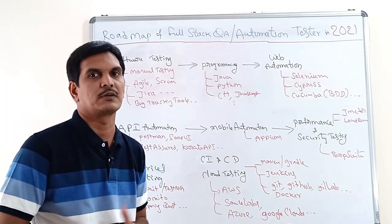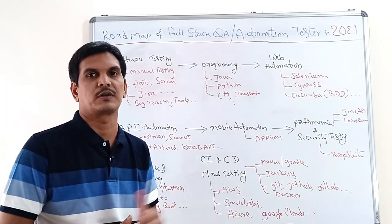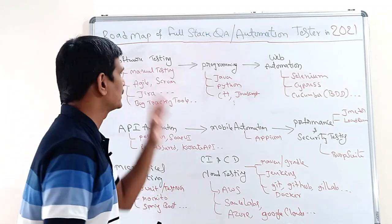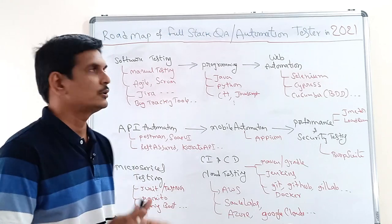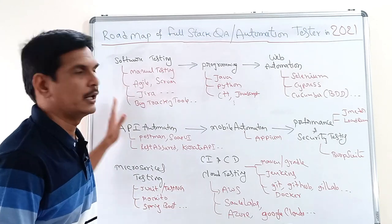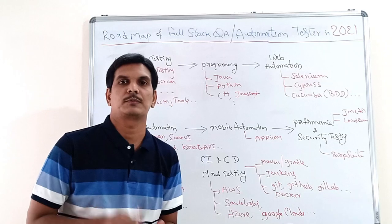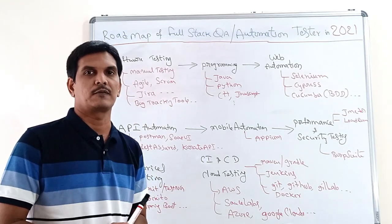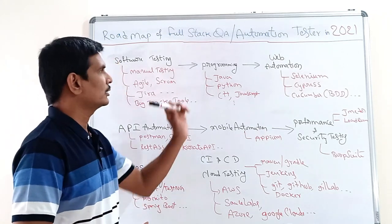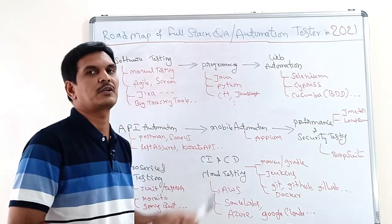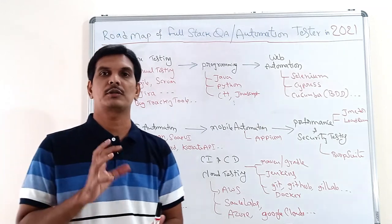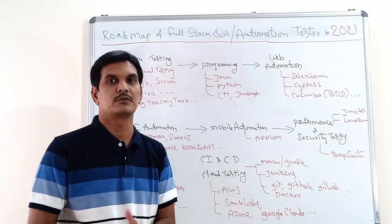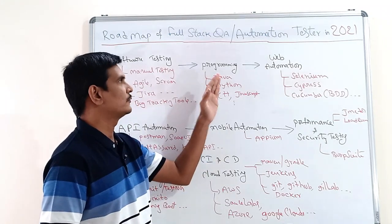Whether you go for manual testing or automation testing, you first have to know the basics of software testing. Once you learn software testing concepts, the next level is the programming part. Nowadays programming is also very important for testers. You have to know at least one programming language thoroughly. There are so many programming languages, but what are the most relevant ones for testing?